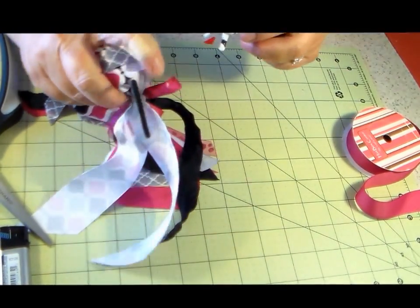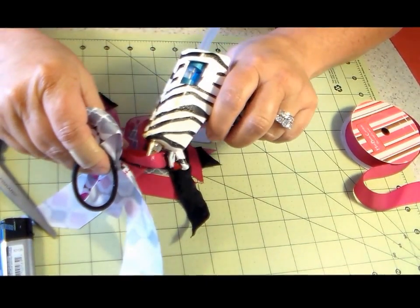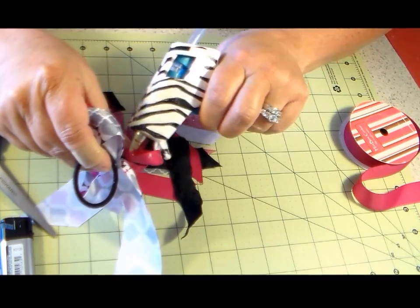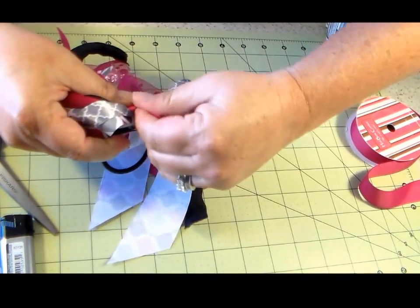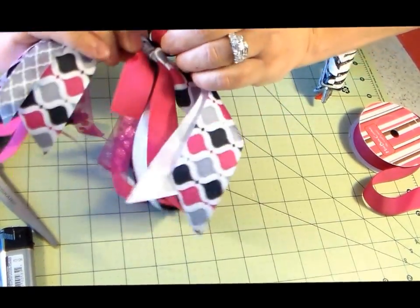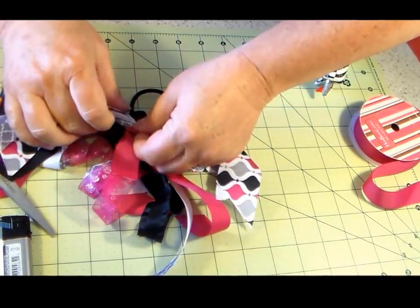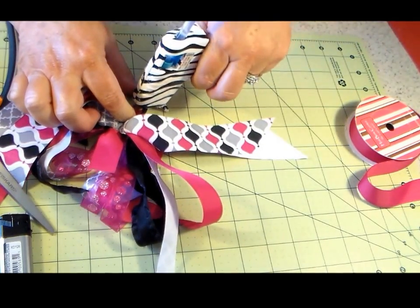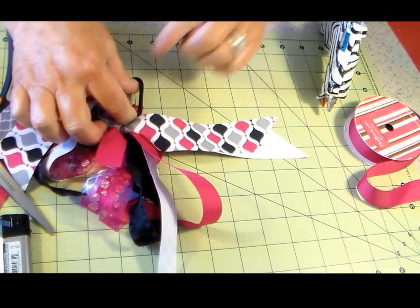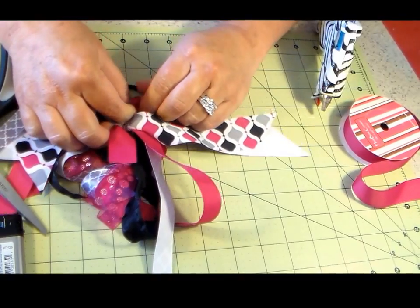And then I usually take a little bit of hot glue and put in that little valley, whatever you want to call it, to hold it. And then you just wrap it and glue it. Now I'm going to have a little bit of extra, so I'll just glue it over. And it can give a little bit of extra padding.